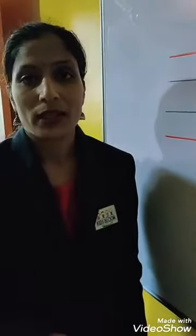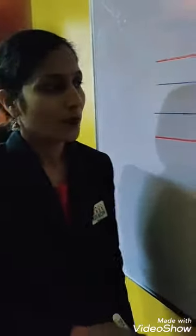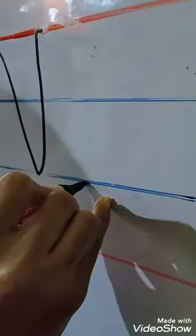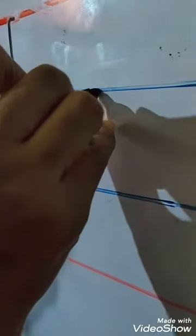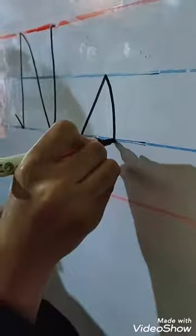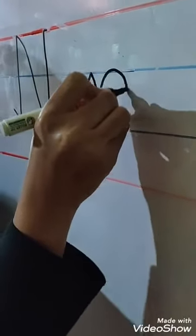Now I will show you how to write the small cursive N. Keep your pencil on the third line. One slant line from third line to second line. Then, like this. This is a small cursive N.